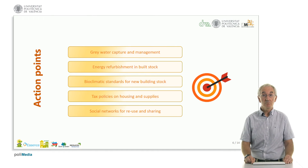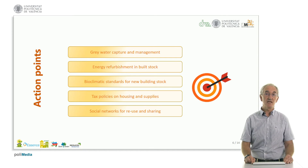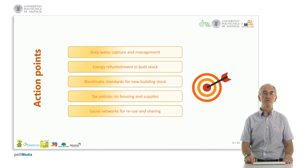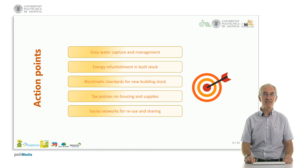The action points include: greater water capture, energy refurbishment in the building stock, the introduction of bio-climatic standards in order to use solutions from nature, addressing government policies through taxes in order to drive individual behavior toward the final solution, and also an increased use of social networks for reusing and sharing, because that added value is most important in order to create real value — which is more than obvious in circularity.